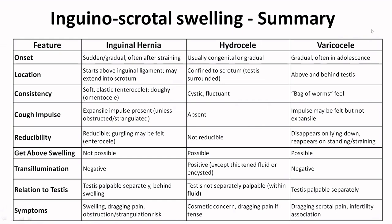So pay attention — you can take screenshots of these slides for ready reference towards your exam preparation. We will see the inguinal hernia first. We have already seen these points but now we are going to compare and contrast hernia, hydrocele, and varicocele — three of the most common differential diagnoses when it comes to inguinoscrotal swelling.